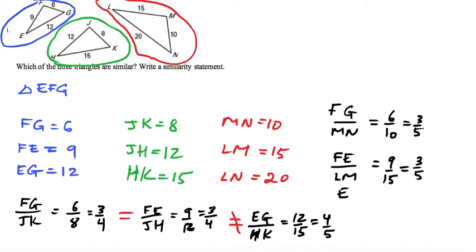And finally, EG/LN = 12/20. What number goes into both of them? Four. Four divided by four is three, twenty divided by four is five. So this time it actually works. The triangle that I circled in blue and the one in red are similar to each other.